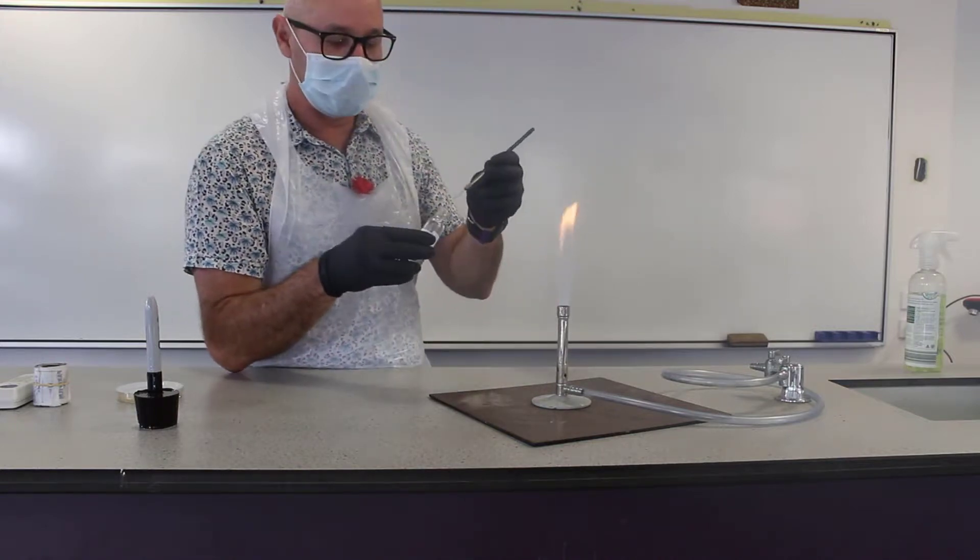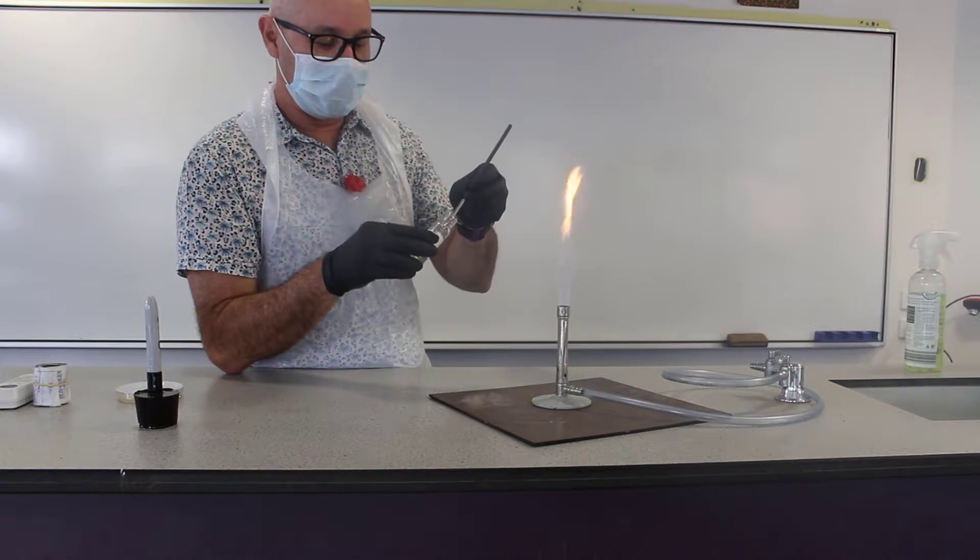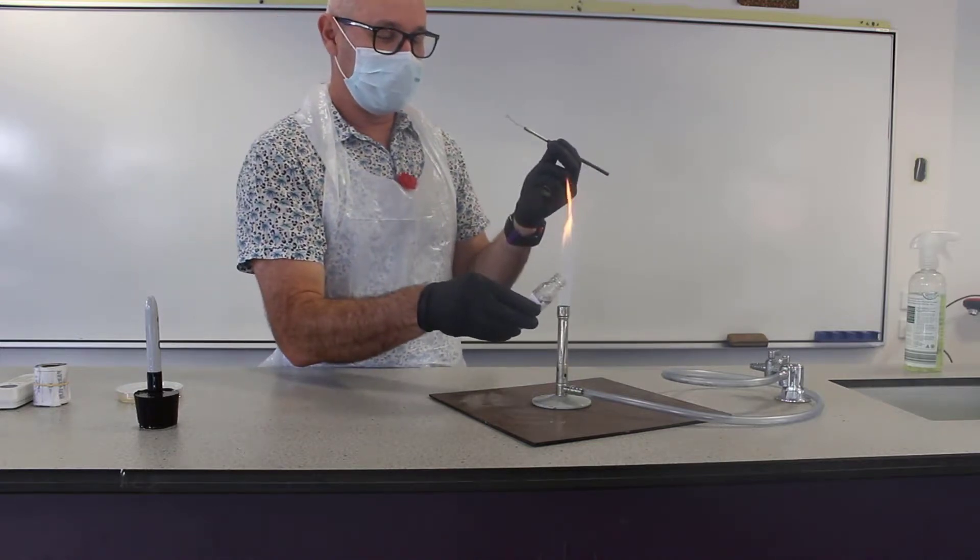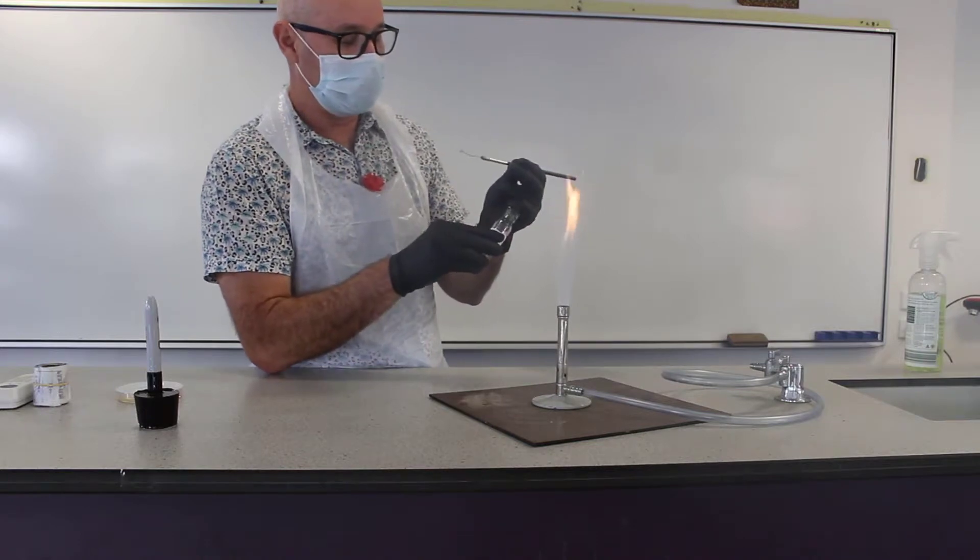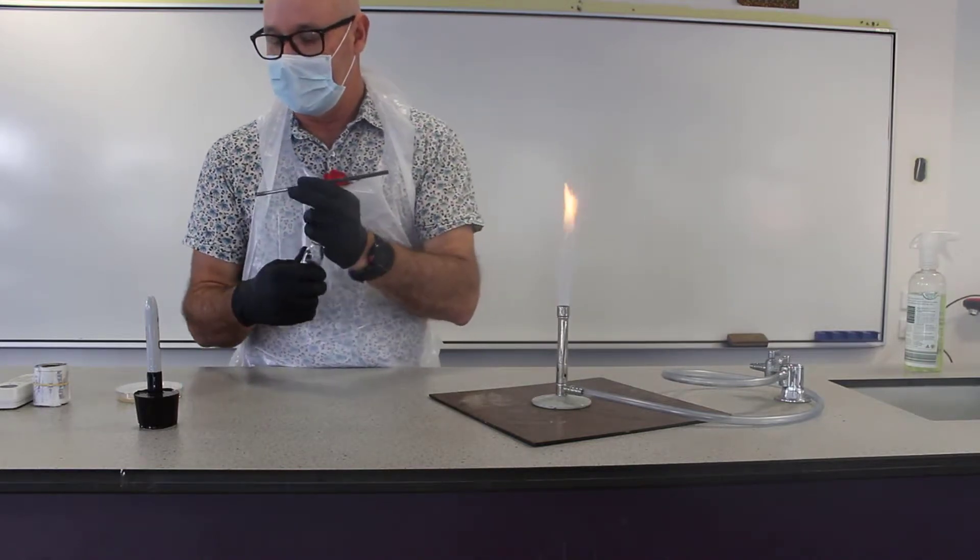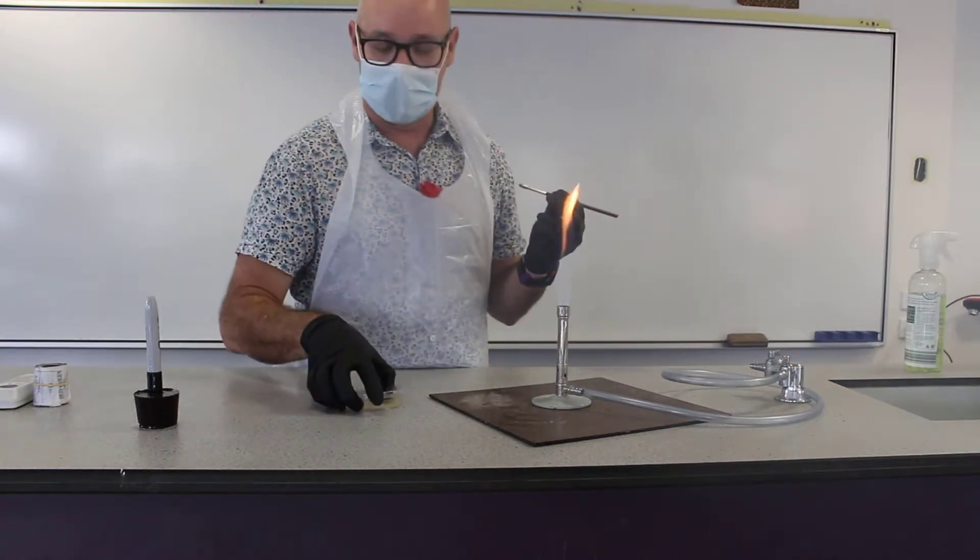Now we're going to put our loop inside the broth, take it out and we'll flame the jar again, then put the lid on. And then we put this out of the way. Now we're ready to inoculate our plate.